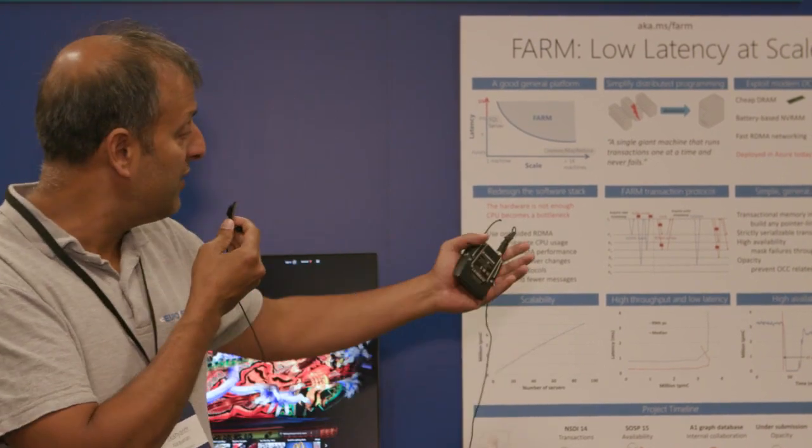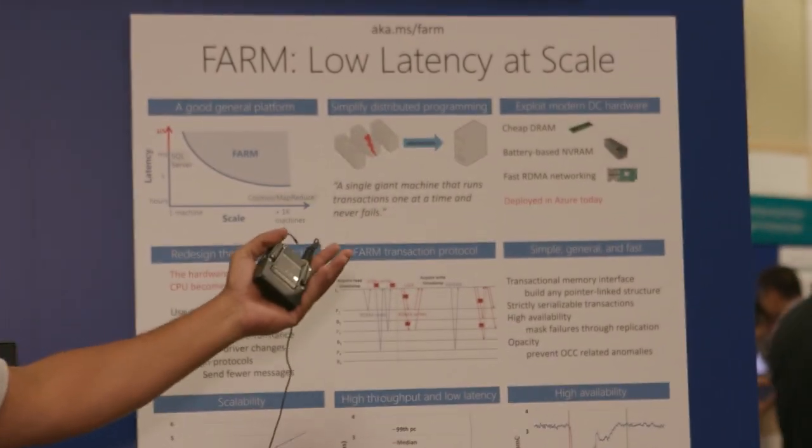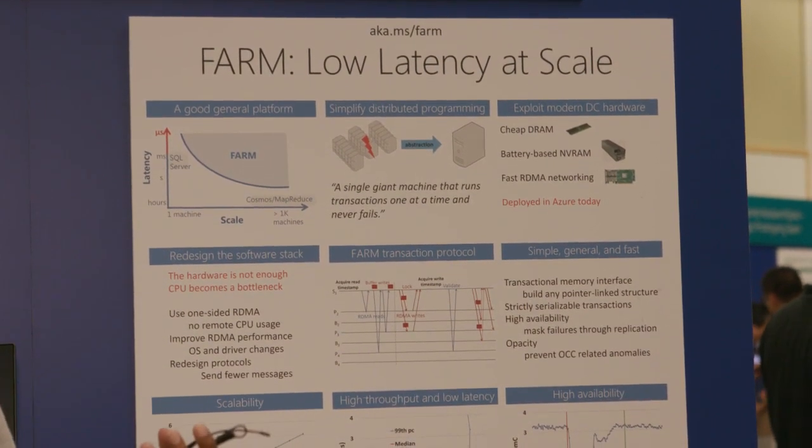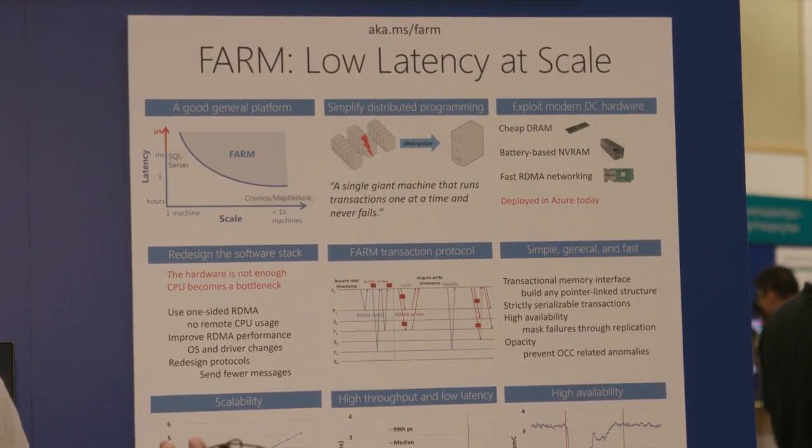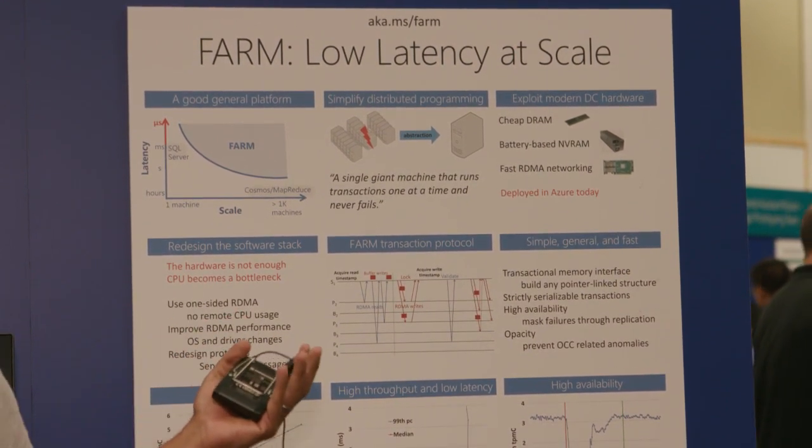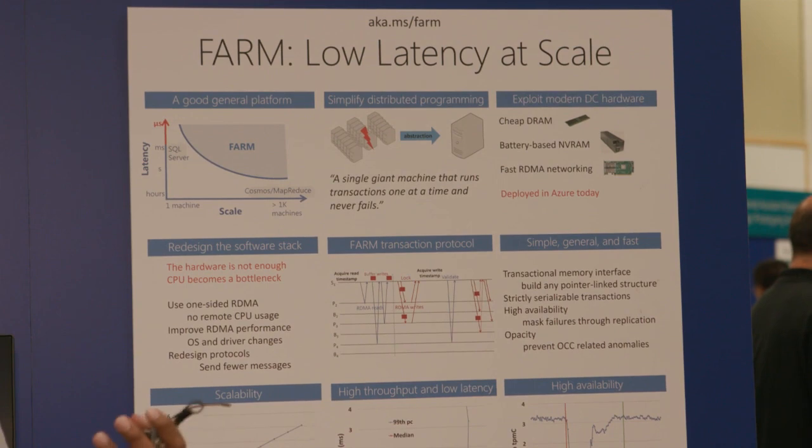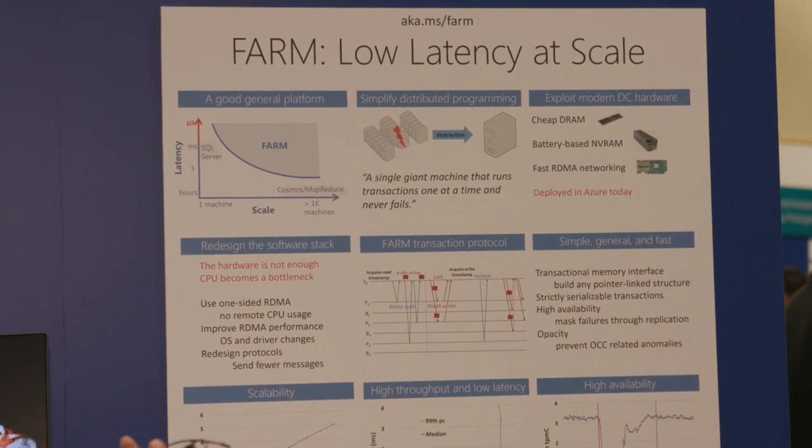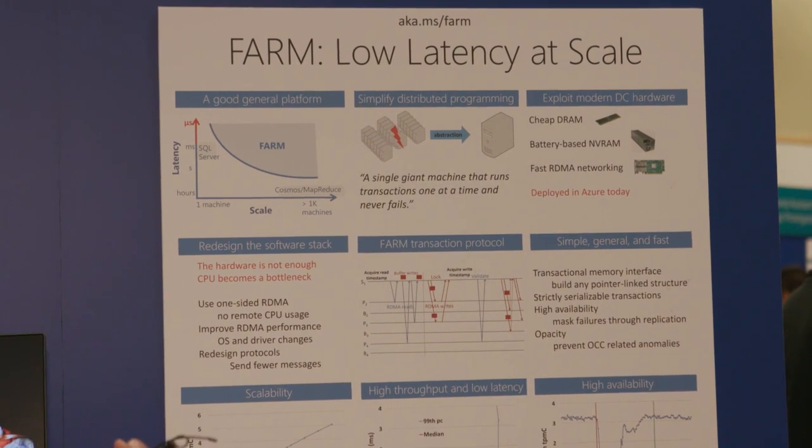And to achieve this, we leverage the hardware that's present in our Azure data centers today. So plentiful and cheap DRAM means we can keep the working set of applications in memory for low latency. Lithium-ion batteries integrated into the racks let us make this memory non-volatile at low cost. And fast RDMA networking lets us cut the cost of scale out.